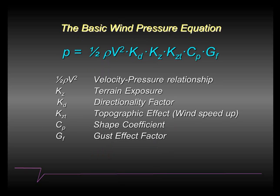In Chapter 26, you'll notice that the basic wind pressure equation used at the heart of the standard is identified. It's important to realize that this wind pressure equation is really the standard wind equation that you'll see in just about every specification around the world, including the Euro code, the Australian code, and the Canadian code. The terms and symbols might be different, but the principles are all exactly the same. Basically, you have a velocity pressure — the one-half rho V-squared term — and a term that in ASCE 7 we call K sub Z, which is a terrain exposure factor. It adjusts the basic wind pressures for height as well as different exposures, such as open country, suburban, or exposure over water.